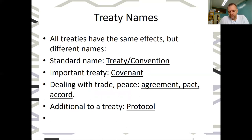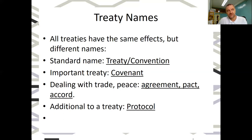Another important category for human rights is protocols. A protocol is a treaty which is an addition or add-on to an existing treaty. In human rights there are nine treaties and nine protocols, and these just add rights or certain elements to an existing treaty. A protocol doesn't stand alone by itself — it is just an addition to an existing treaty.